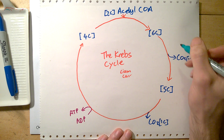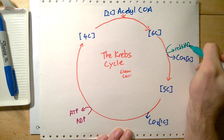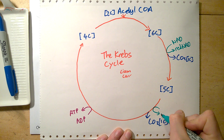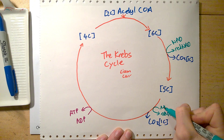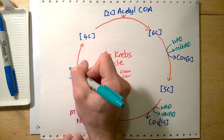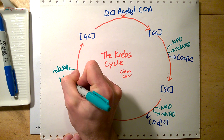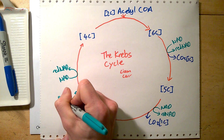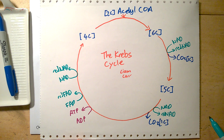What is the point of the Krebs cycle? It's reduced NAD. NAD is a hydrogen carrier, and reduced NAD means that hydrogen carrier has hydrogen on it — and that is very important for the next stage. We also get another hydrogen carrier, reduced FAD.